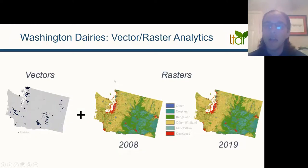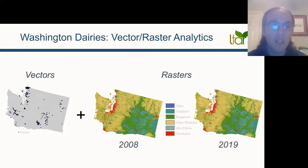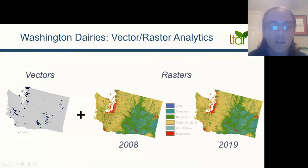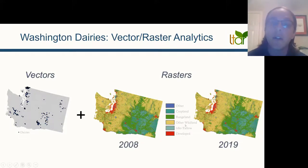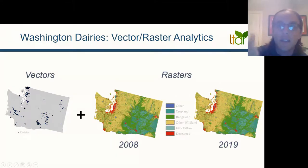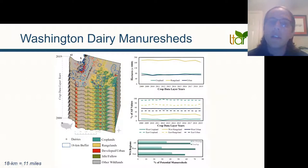Now we'll talk about how we combine the use of vectors and rasters, specifically for the Washington dairy system. On the left is point data — a vector representation of the 370 dairies within the state of Washington. On the right are two rasters, one from 2008 and one from 2019. This is the Crop Data Layer resampled to represent croplands, rangelands, other wildlands, and developed areas. We actually have this data from 2008 through 2019. The goal is to determine around each dairy how much land is available to uptake the manure.